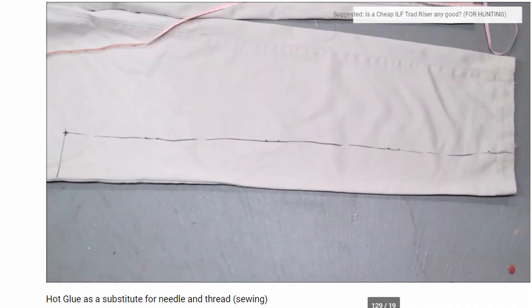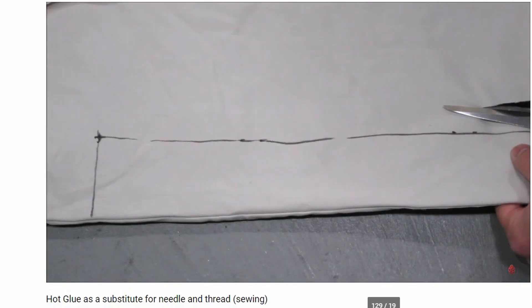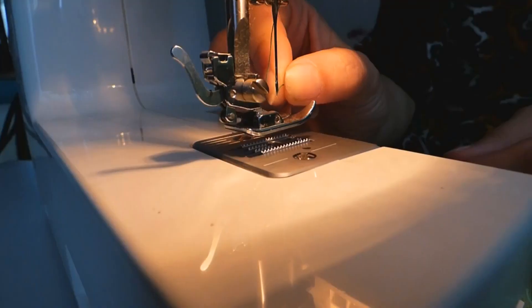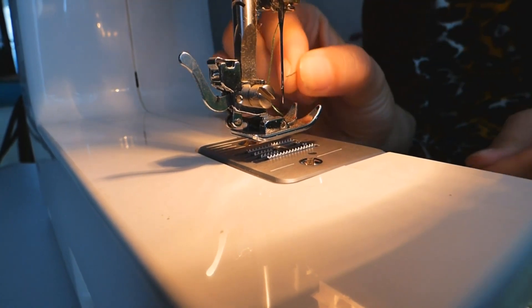A while back I made a video about sewing with hot glue. I made some protective socks for my bow limbs and riser with an old pair of pants. I mean, who wants to work with a big machine, that maze of threading the thread and filling the bobbin? The easiest method to bond two pieces of fabric is to use hot glue.